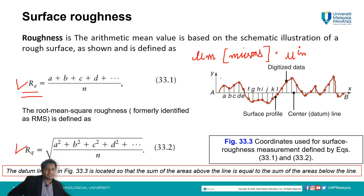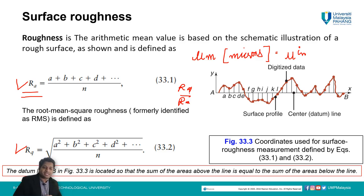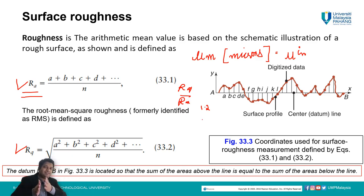If we talk about the ratio of Rq over Ra, it gives us information about which machining process has been carried out. For instance, if Rq over Ra equals 1.1, some machining or finishing process has been carried out. For grinding, we usually adopt Rq over Ra of 1.2, and for lapping and honing, Rq over Ra comes out to be 1.4.